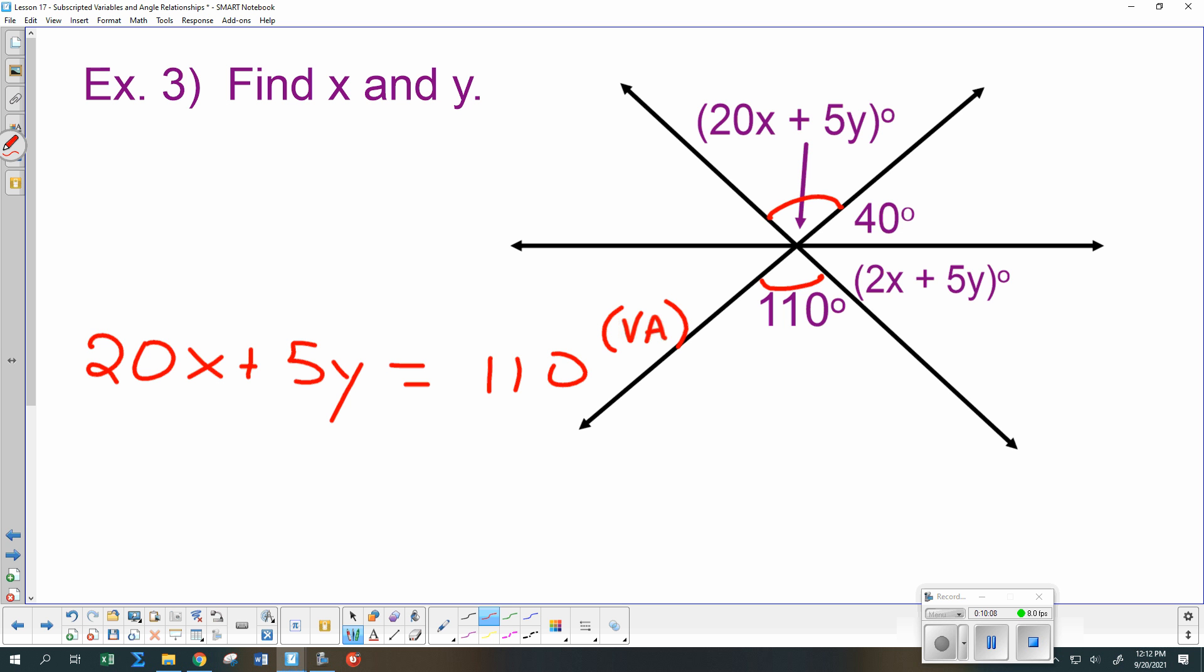So that gives me an equation with x and y. Now I need another equation. So are there two other things that are the same as each other? Or are there some things I can put together and figure out what they have to add up to? Look at the picture. Anything else? First off, anything that's labeled that we know is the same as each other or that we can put together?